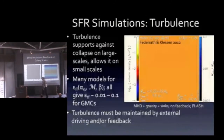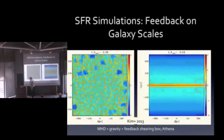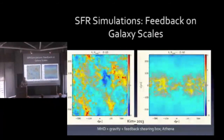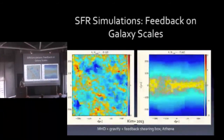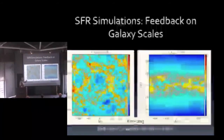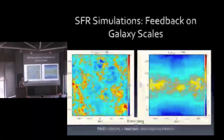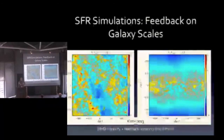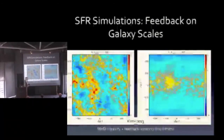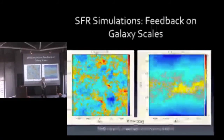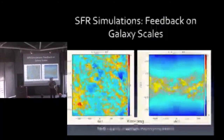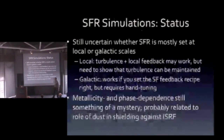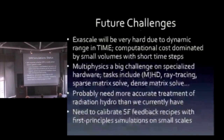Another approach is to say feedback solves it, and that's certainly part of the answer. But feedback can't be the entire answer, because we get the same really inefficient, slow star formation even in places with no massive stars. Taurus is not turning itself into stars at 100% per free-fall time — it's the same as Orion, still one percent per free-fall time, despite Orion having a huge HII region and Taurus's most massive star being about two solar masses.